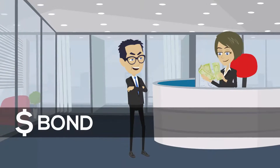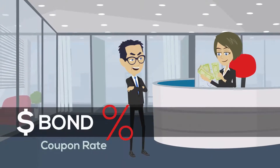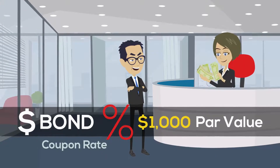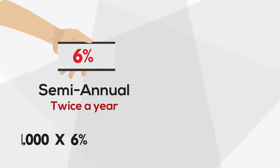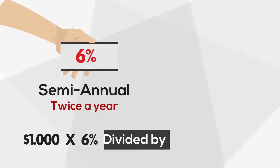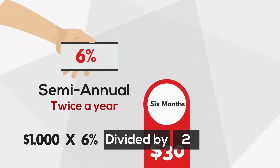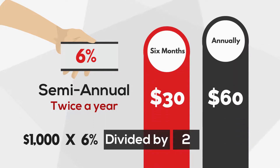Each bond has a coupon rate. This is the amount that will be paid to the investor based on the $1,000 par value. If the coupon is 6% paid semi-annually, you'll receive $30 every six months or $60 annually.